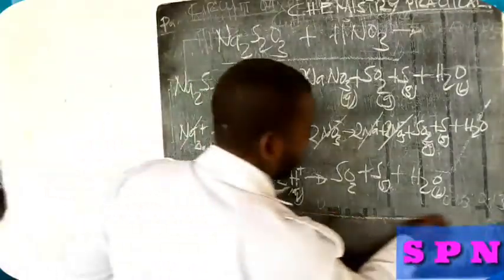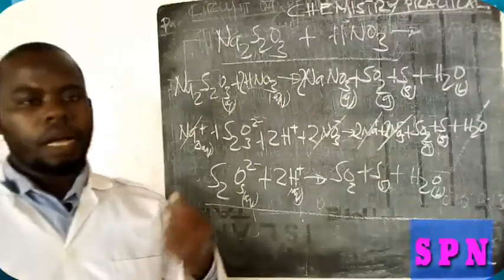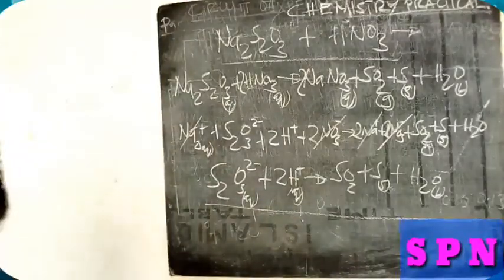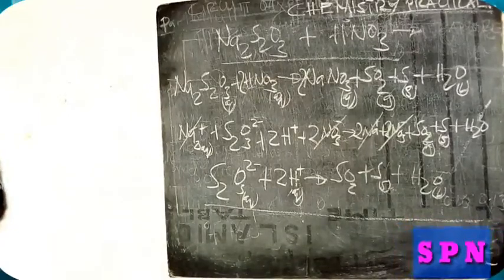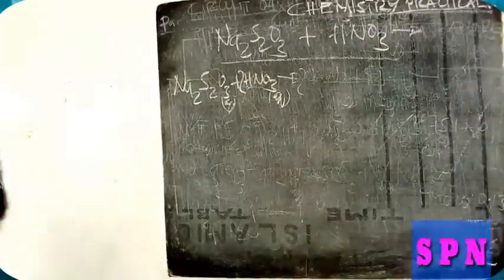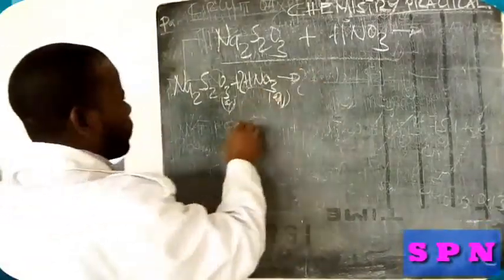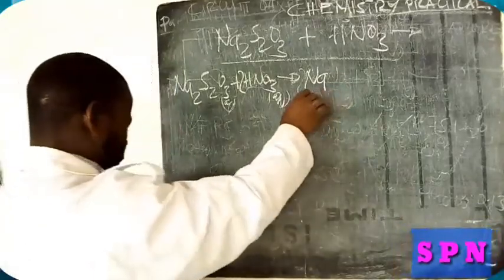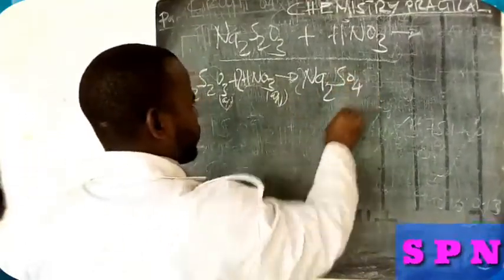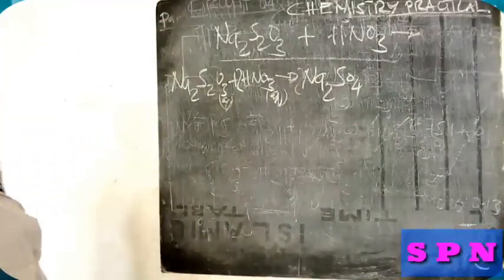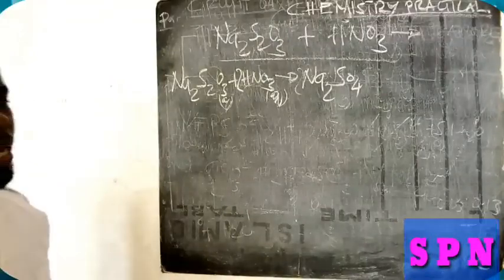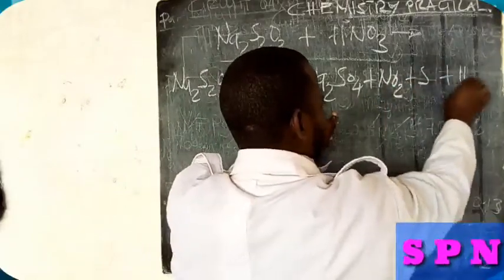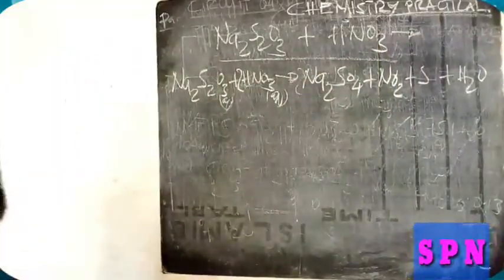The second way: we are going to produce sodium sulfate, Na2SO4, then instead of sulfur dioxide, we are going to produce nitrogen dioxide, NO2, plus sulfur, S, plus water, H2O. That is another way.